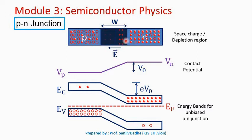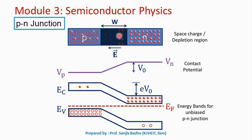The region where the positive charge on the N side and negative charge on the P side are created near the junction is called the depletion region. To deplete means to keep away — what is kept away are the carriers. So there are no carriers inside this region; it contains only immobile ions: positive ions on the N side and negative ions on the P side.